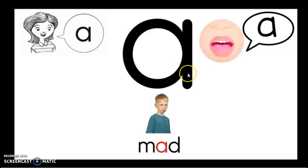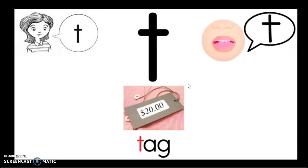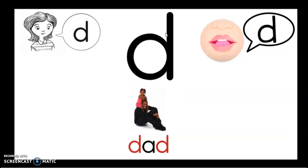For the t sound, you're going to make a straight line down and then cross over. For the d sound, you are going to make a circle and then a longer line straight down that touches your circle.